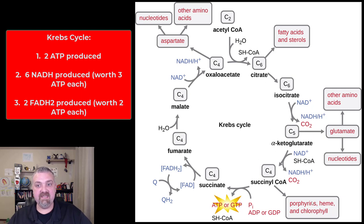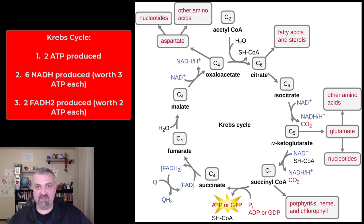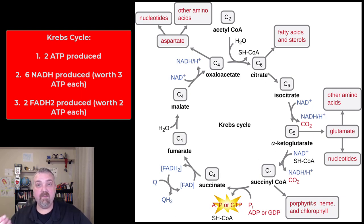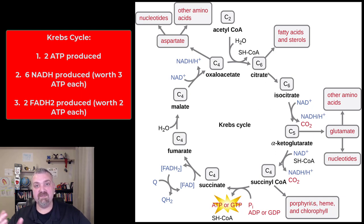I like to use the analogy of casino chips. You're going to get a lot of money in casino chips during the Krebs cycle — you're going to produce a total of six NADHs, each worth three ATP, and two FADH2s, which are worth two ATP. During this step we only made two ATP, but we have enough stored electrons to make 22 more: 18 ATP from your six NADHs and four FADH2s. Critically important step — you don't make a lot of energy now, but when we go to the next step, the electron transport chain, you're going to have lots of chips to cash in.